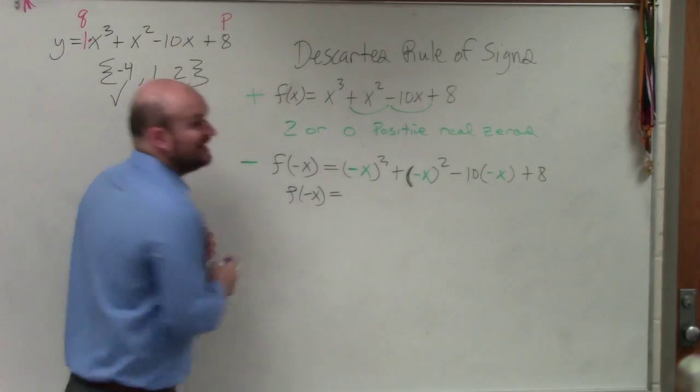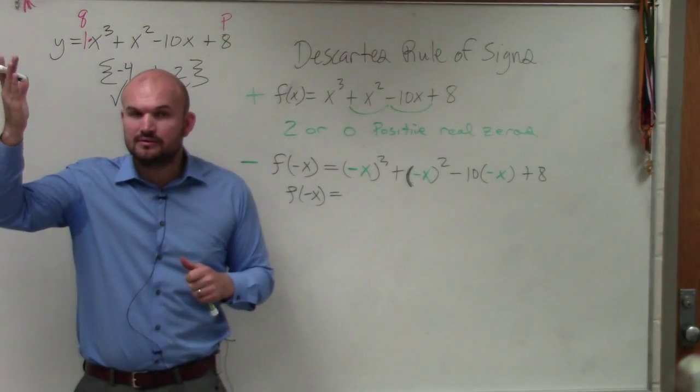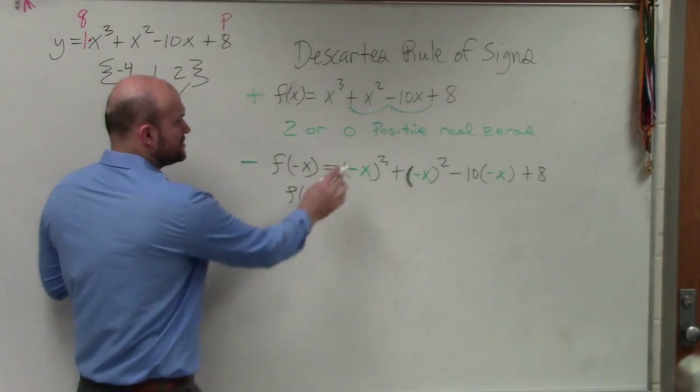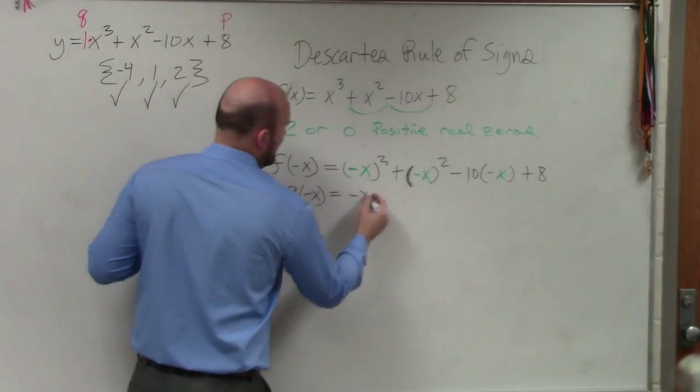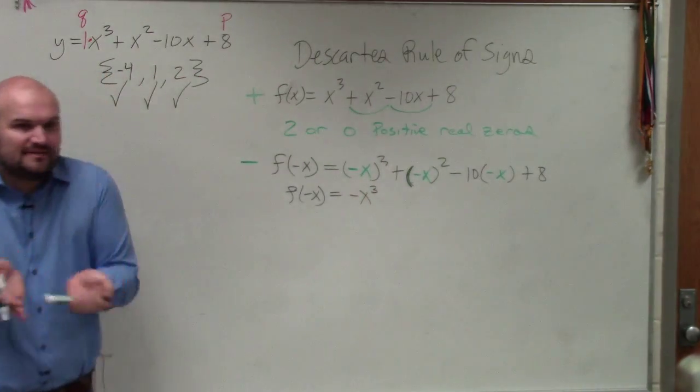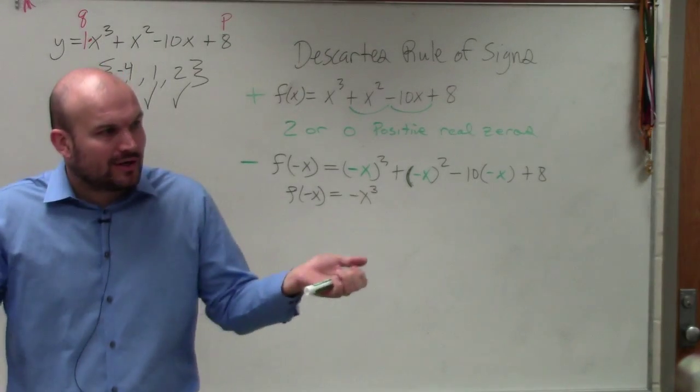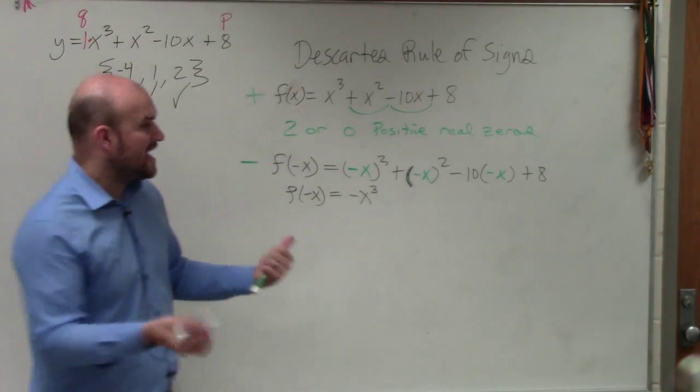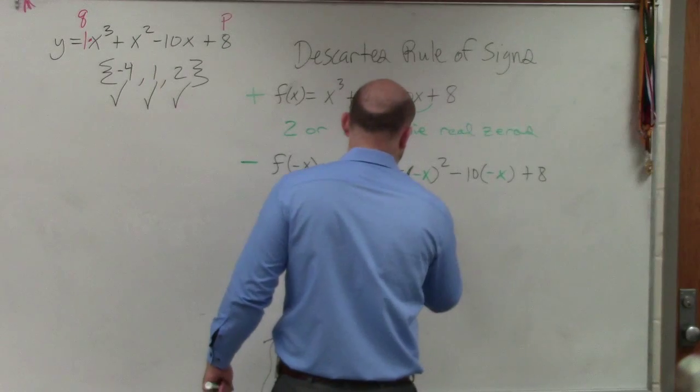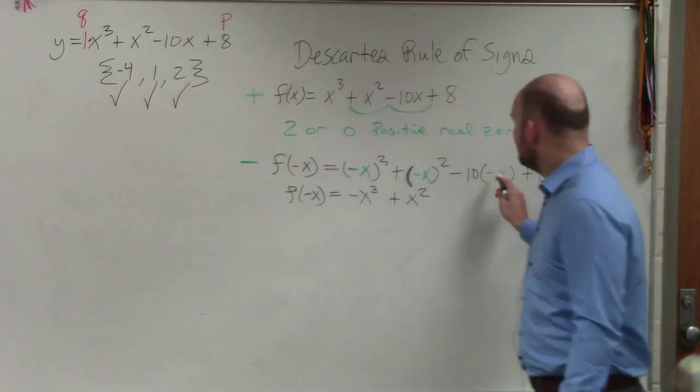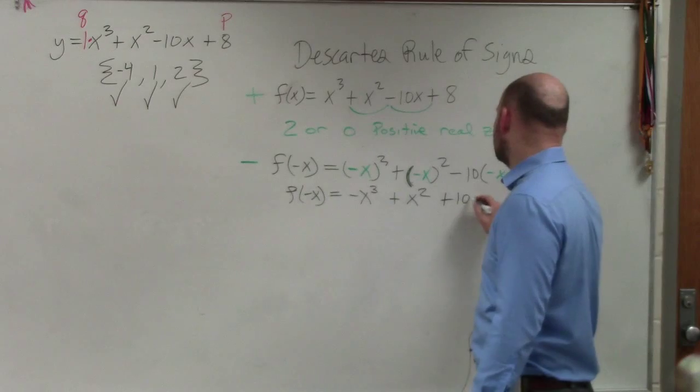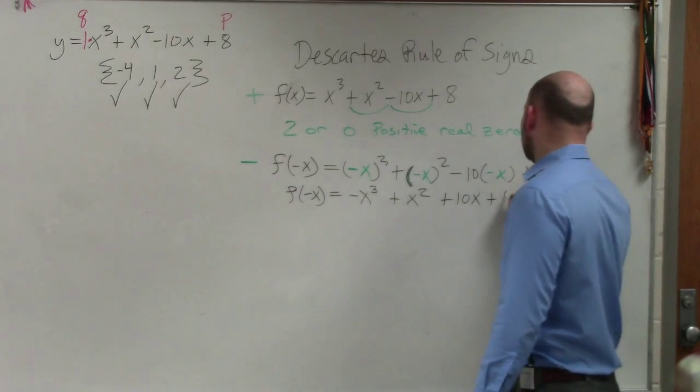So any negative number raised to the odd power is always going to be negative. So -x³ is -x³. Any negative number raised to an even power is positive. So (-x)² is positive x². -x times -10 is +10x and then plus 8.